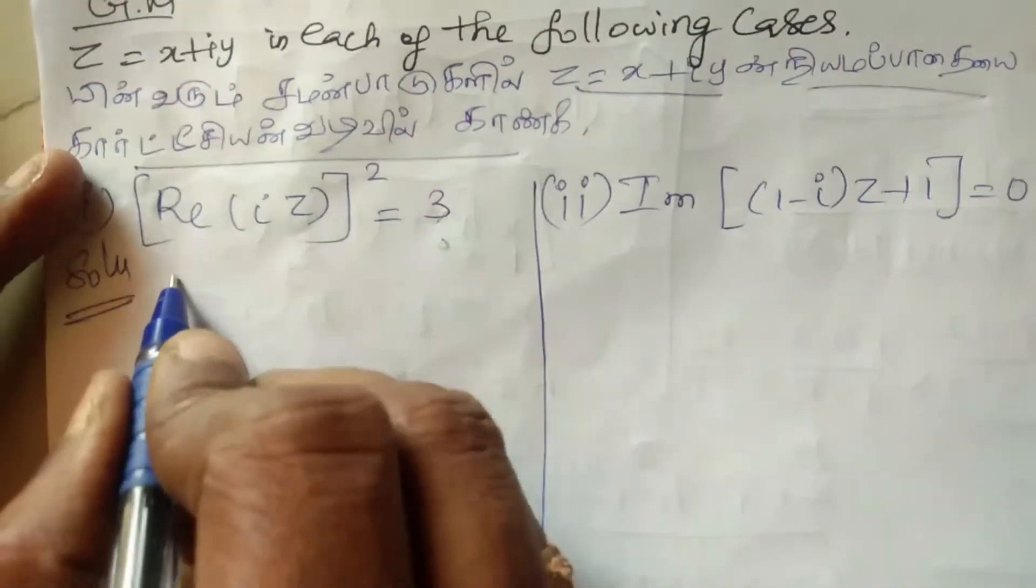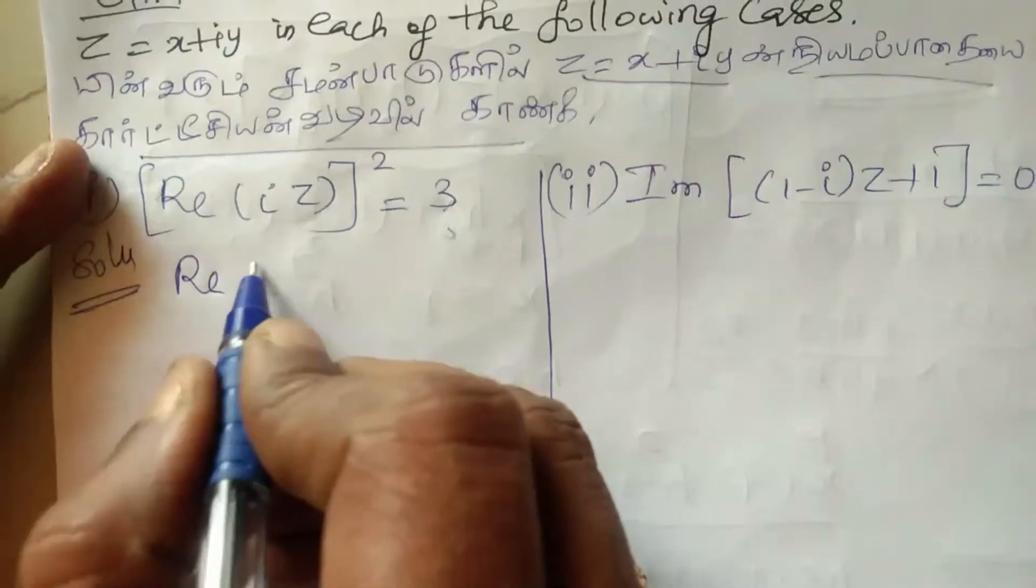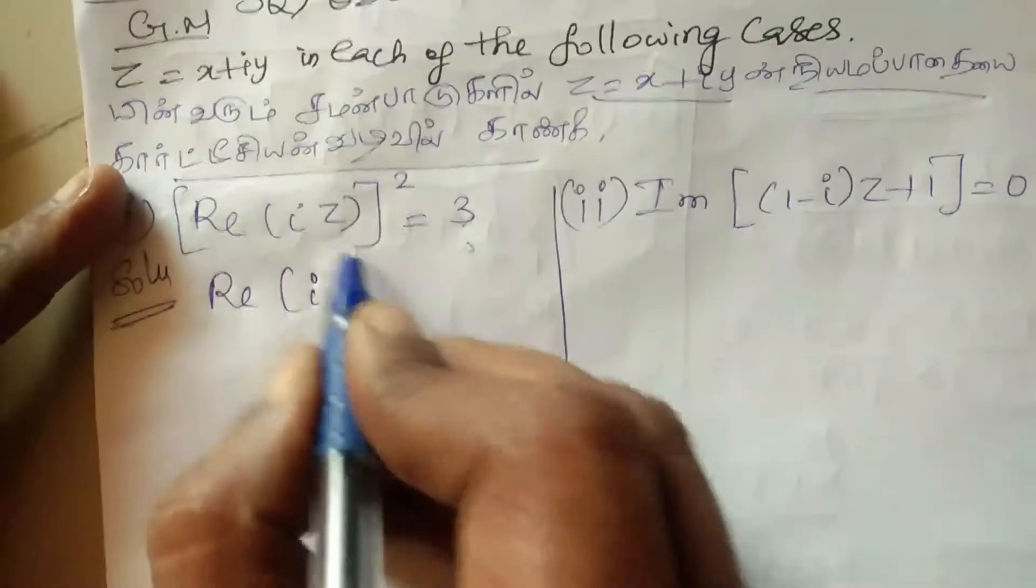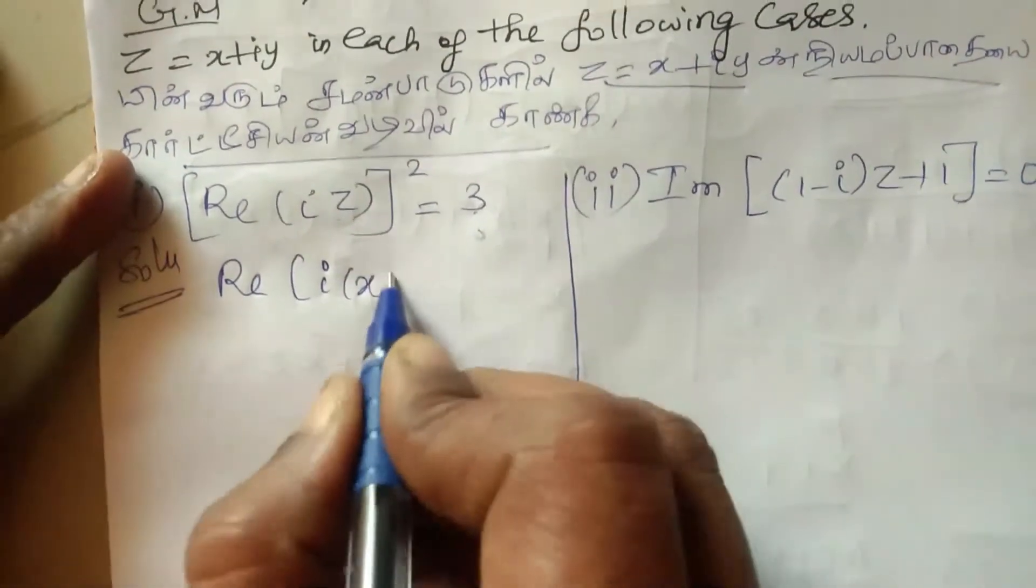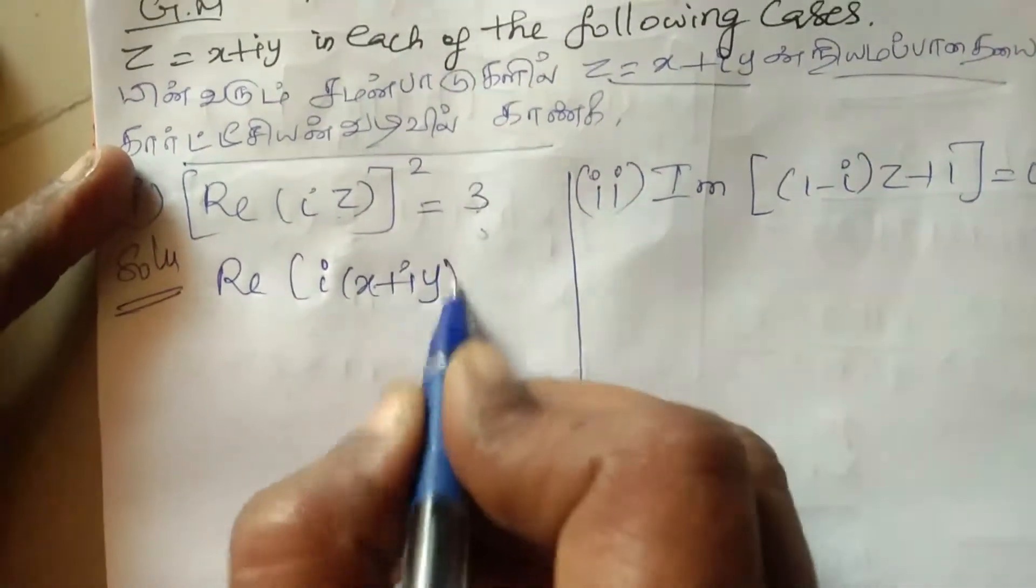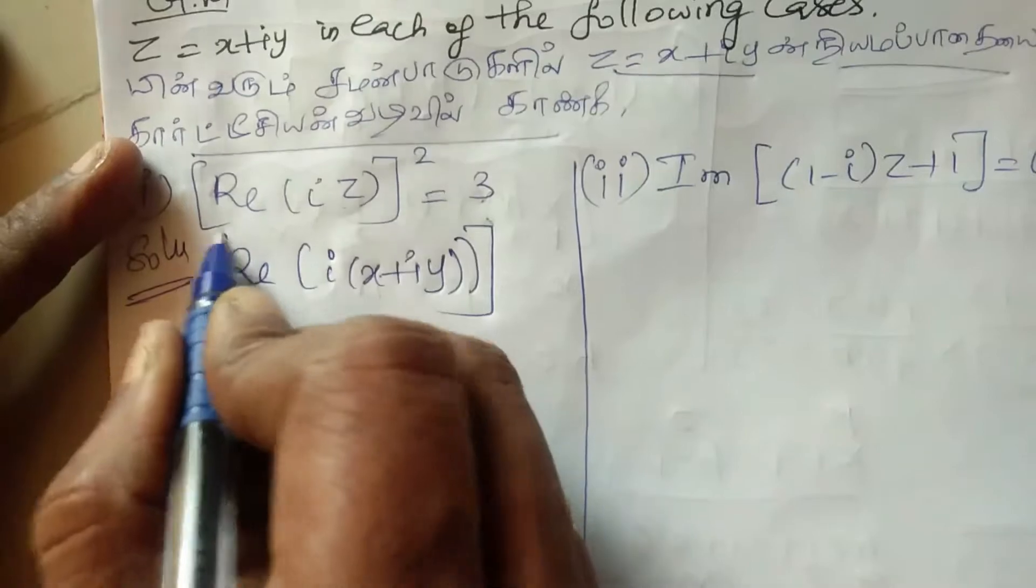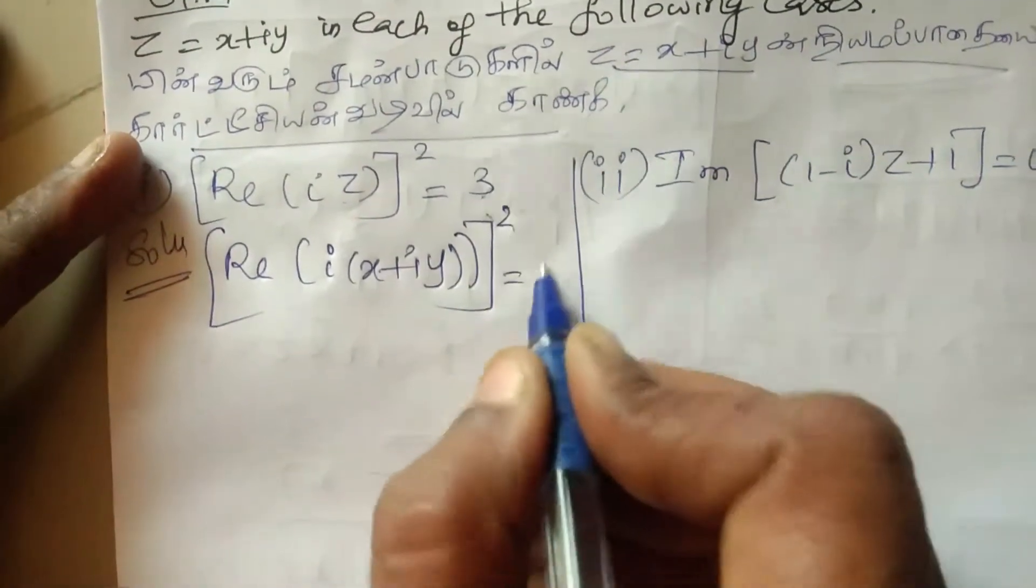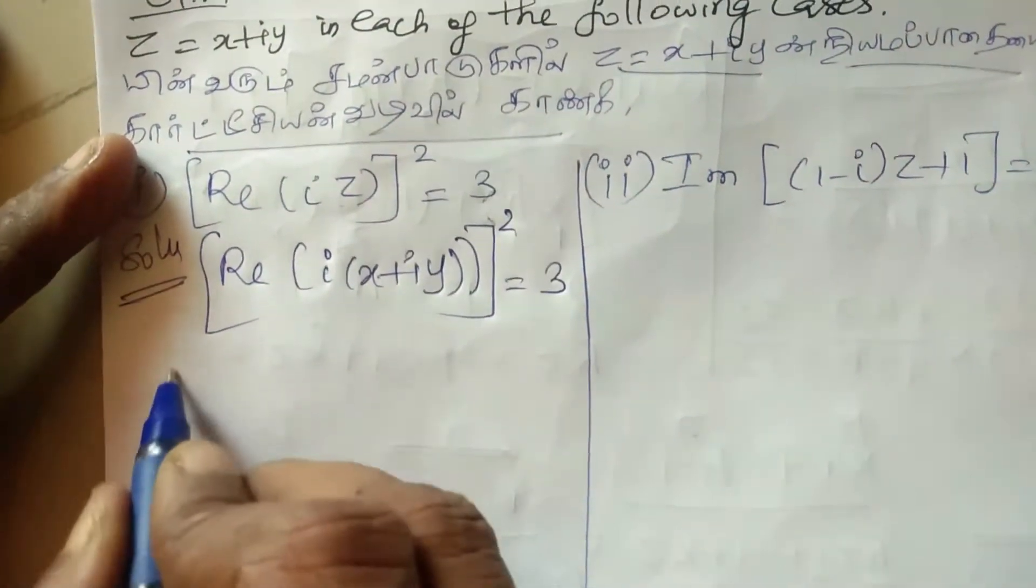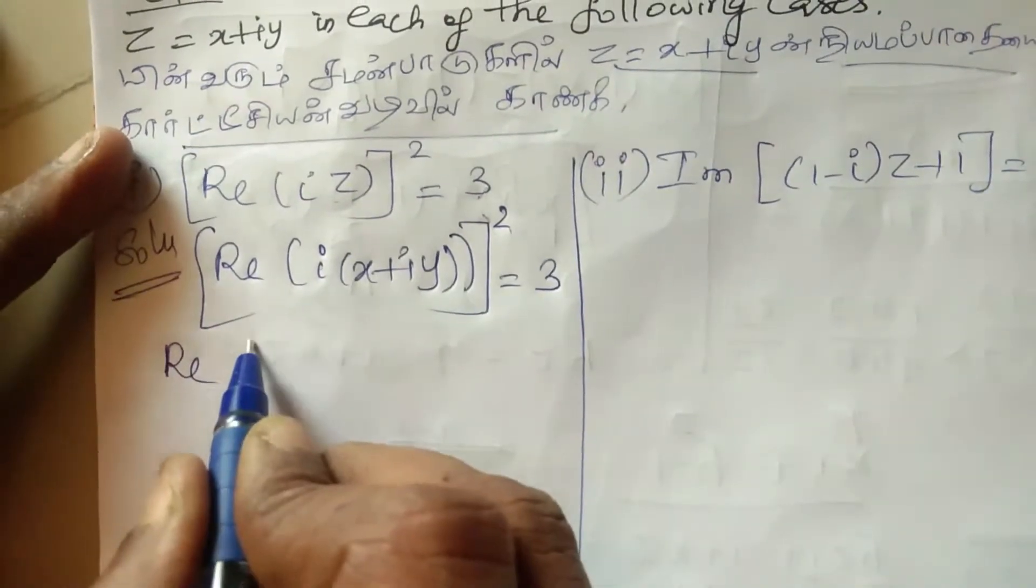So first one solution: real part of I into Z where Z is X plus IY. We need to substitute Z as X plus IY, Z bar as X minus IY. Then take the whole square.